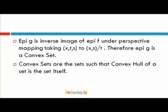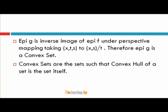Essentially, this represents that the epigraph of g is an inverse image of the epigraph of f under the perspective mapping, taking (x, t, s) to (x, s/t). Therefore the epigraph of g is a convex set. These issues will be discussed in more depth in the optimization channel. Directly stating the result: a set is convex if its convex hull equals the set itself. If the convex hull of a set is the set itself, then the set is a convex set.